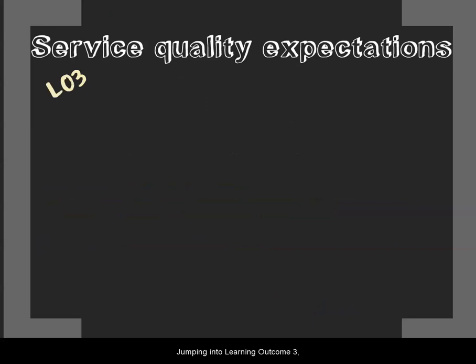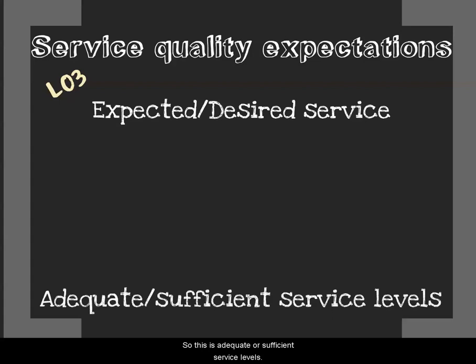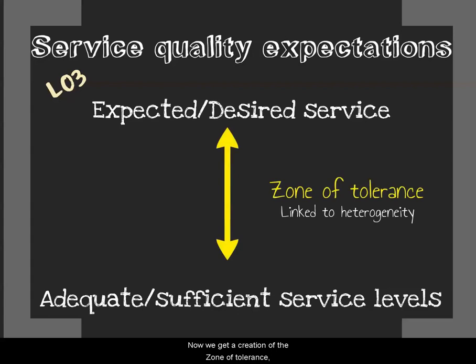Learning Outcome 3 deals with service quality expectations, on page 39. First, desired service is the level of service quality a customer actually wants from a service encounter — often the ideal expectation. Sufficient service, on the other hand, refers to the level of service quality a customer is willing to accept — adequate service levels. Between these two levels is the zone of tolerance: the difference between the desired service level and the adequate service level.